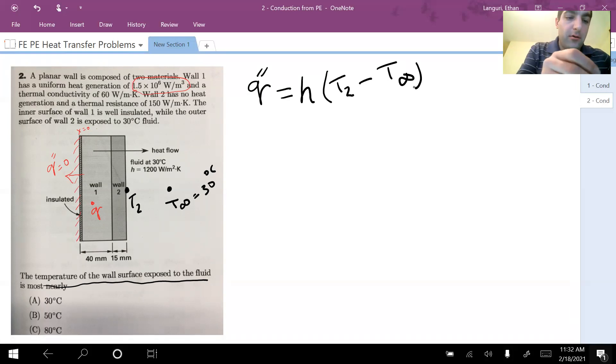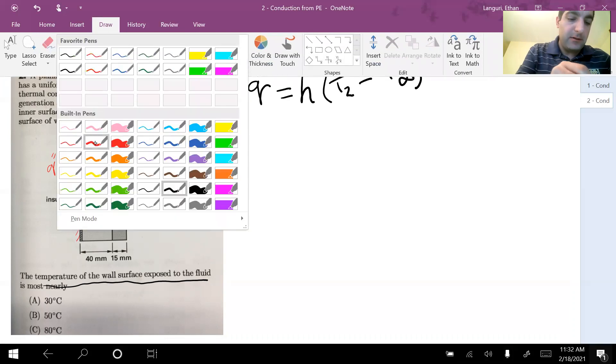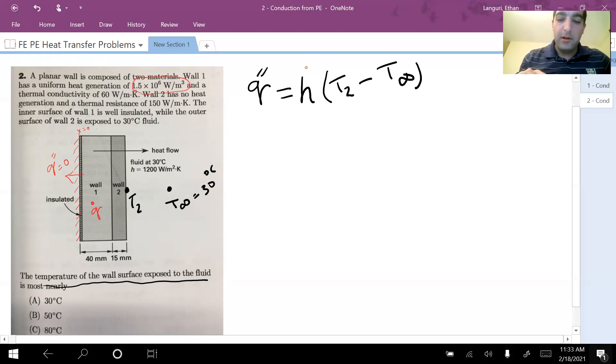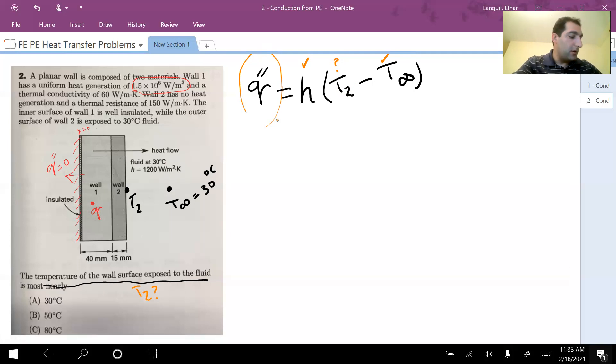Let's see what we know and what we don't know. I already know the heat transfer coefficient. I'm looking for T2. I know T infinity, which is 30 degrees C. So my missing information on the right hand side is T2, that's what I'm looking for here. Now I also need to know the heat flux going through wall two to the fluid. How can I find the heat flux?